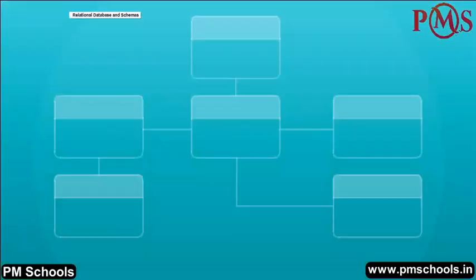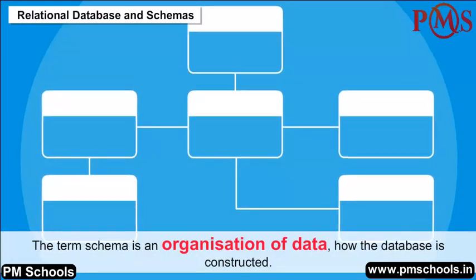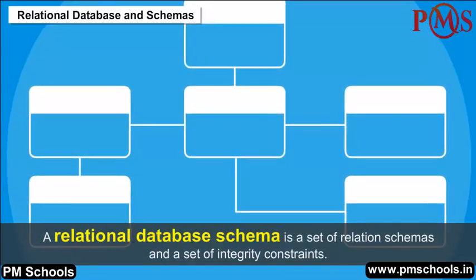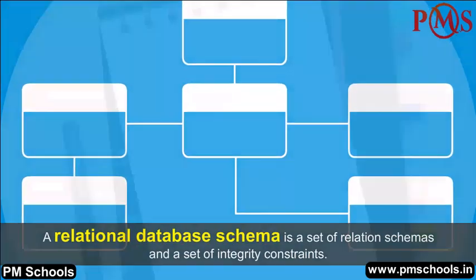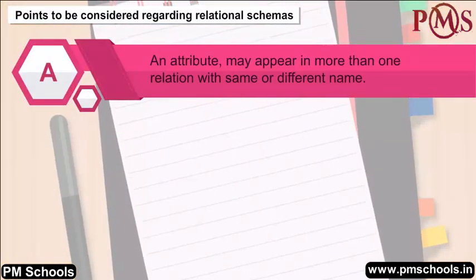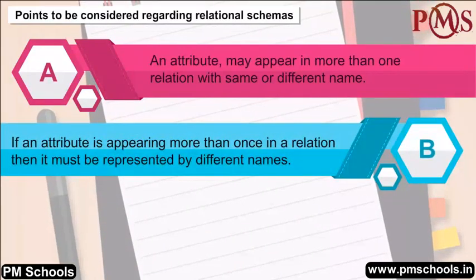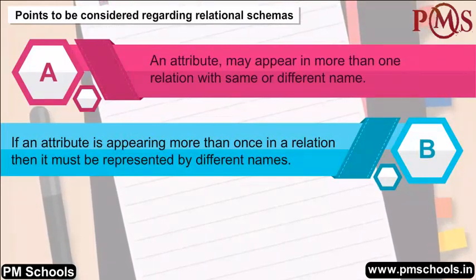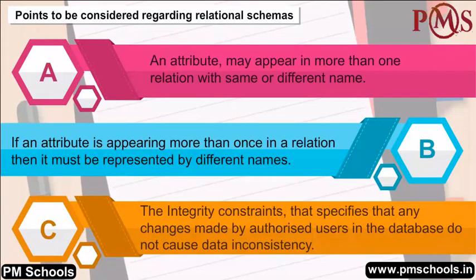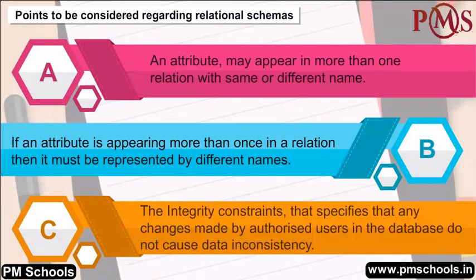RDBMS Schemas: A schema is an organization of data describing how the database is constructed. A relational database schema is a set of relation schemas and a set of integrity constraints. Points to consider: an attribute may appear in more than one relation with the same or different name; if an attribute appears more than once in a relation, it must be represented by different names; integrity constraints specify that changes made by authorized users do not cause data inconsistency.